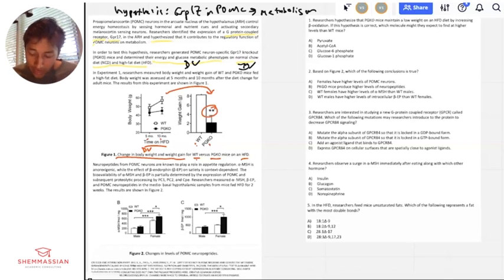Neuropeptides from POMC neurons are known to play a role in appetite regulation. Alpha MSH is anorexigenic while the effect of beta endorphin on satiety is content dependent. The bioavailability of alpha MSH and beta endorphin is partially determined by the expression of POMC and subsequent proteolytic processing by PC1, PC2, and CPE. Researchers measured alpha MSH and beta endorphin neuropeptides in the medial basal hypothalamic samples from mice fed high fat diet for two weeks. Results are shown in figure two.